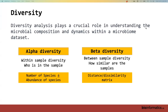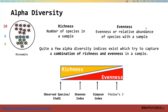Alpha diversity focuses on a single sample: how many species does it have, and what are their abundances? Beta diversity then asks: given what I know about individual samples, how is one sample different from or similar to another? What is the relationship between them?